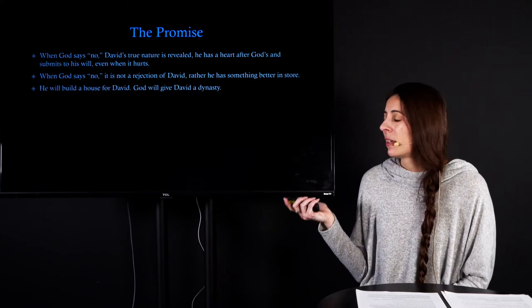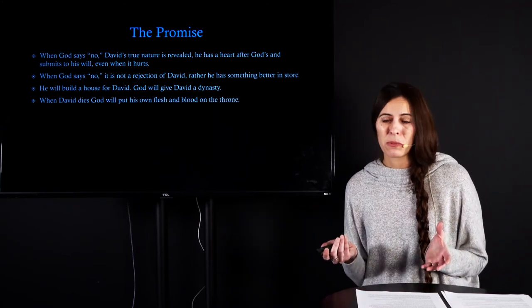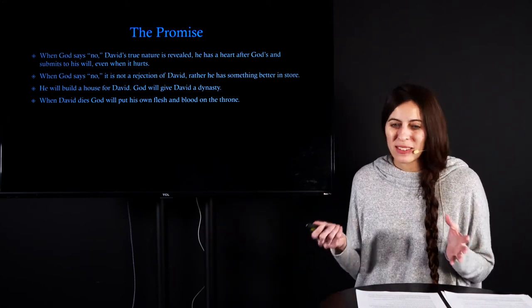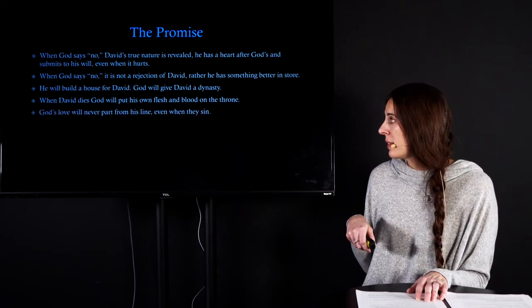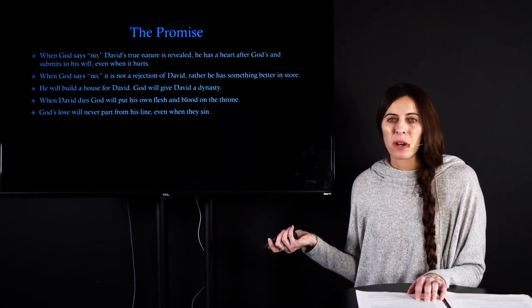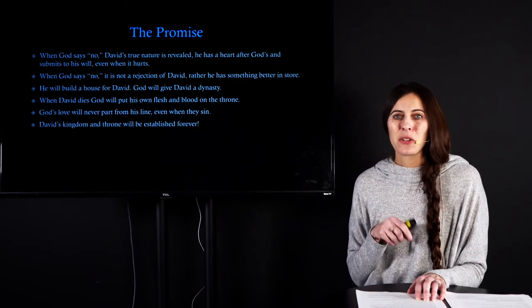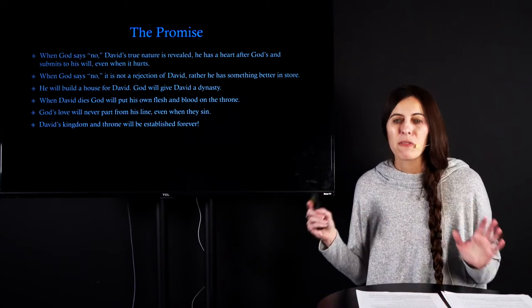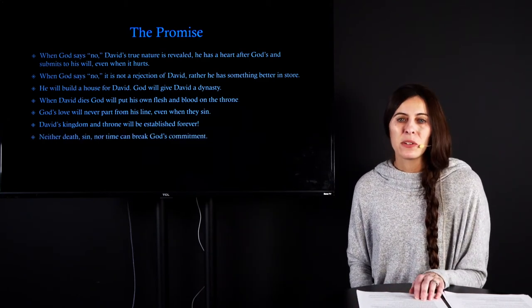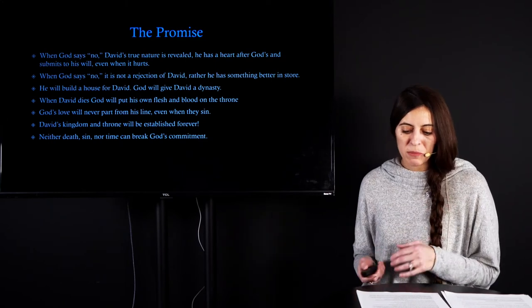So David, when you die, I am going to put your son, your own flesh and blood on the throne. And that is something new for Israel. They've never had a father and then be succeeded by his son. So this is new and it's exciting. And then he tells them, David, not only that, but when your son sins and when his son sins and your line sins, my love will never depart from them. I will never take my love away from them. And then he tells them this, that your throne and this kingdom are going to be established forever, forever. And essentially God is telling him that neither death, sin, nor time will break his commitment. God is that gracious. None of those things will break God's commitment. And ladies, this promise is known as the Davidic covenant. And this idea of a kingdom has long been anticipated.